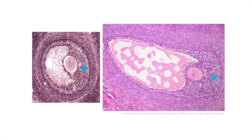When mature or Graafian, the follicles show a large cystic space with a stalk connecting the egg back to the edge of the follicle, known as the cumulus oophorus, noted at the blue asterisk in these photos.